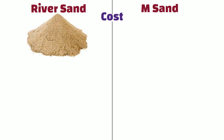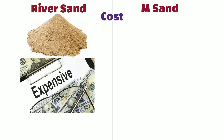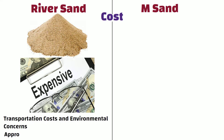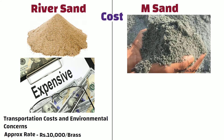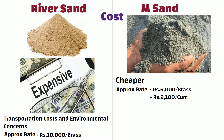Cost: River sand is often more expensive than manufactured sand due to transportation cost and environmental concerns. In general, the approximate rate of river sand is Rs 10,000 per brass, that is Rs 3,500 per cubic meter. On the other hand, manufactured sand, also known as M-Sand, is generally cheaper. Its approximate rate is Rs 6,000 per brass, that is Rs 2,100 per cubic meter. These rates may vary depending on location and availability of raw materials.